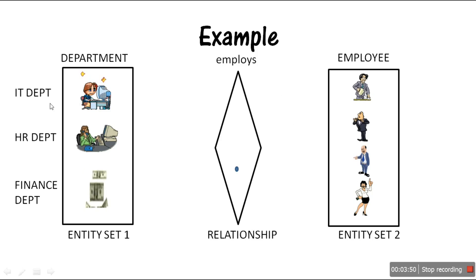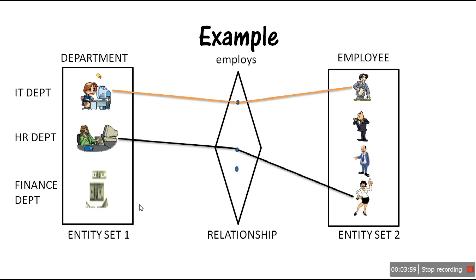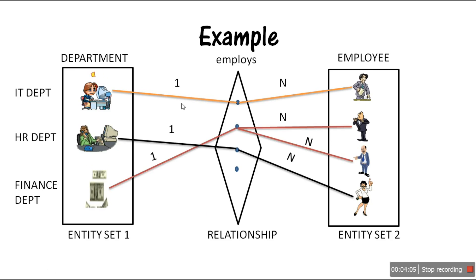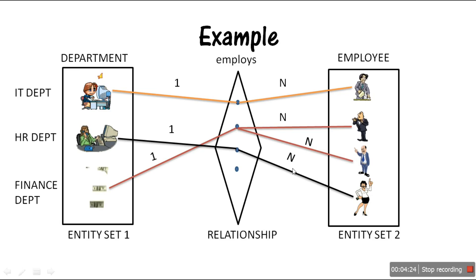Here we have different departments and different employees. You can see that one department — say, Finance — employs multiple employees; that is, one department employs N number of employees. Whereas any of these employees is working only for one department — none of them work for more than one department. That's why the cardinality ratio is one-to-many.